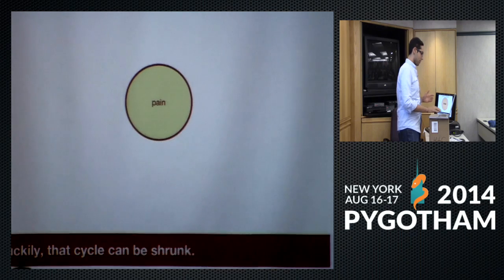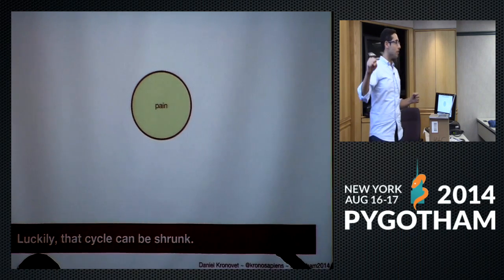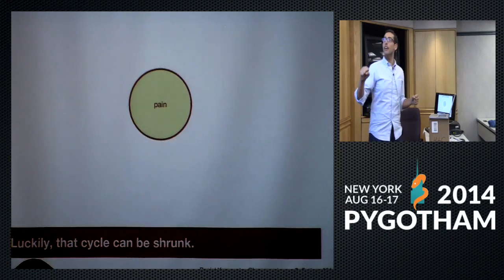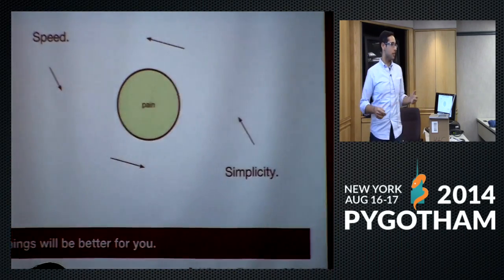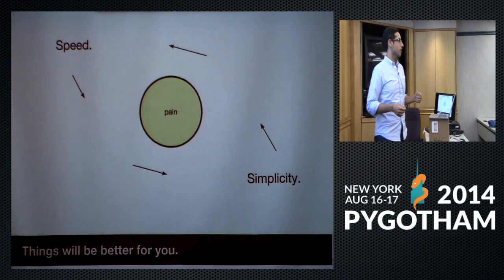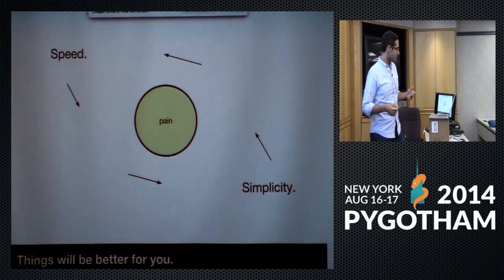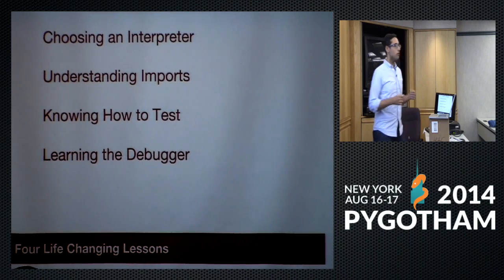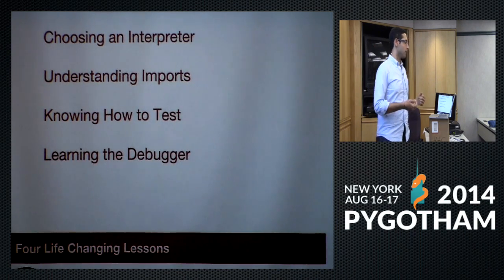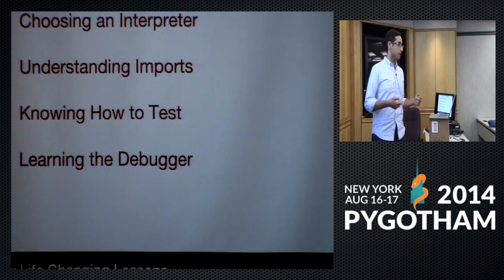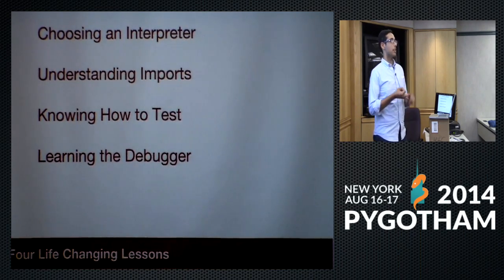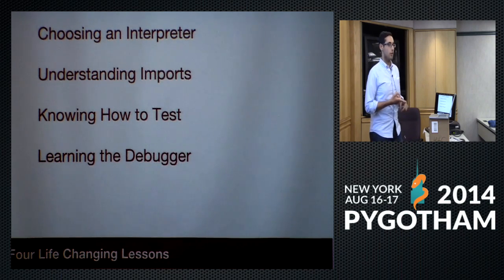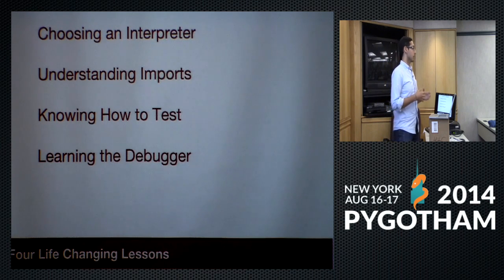This cycle can be made smaller — there will be less pain and more fun. You'll enjoy your job, write better software, and things will be better for everyone. There are four really important things I learned when coming to the Python community about developing productively: choosing an interpreter, understanding imports, knowing how to test, and using the debugger — all very important tools to shorten your development microcycle.